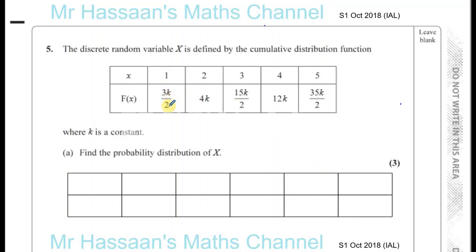Okay, question number 5 from October 2018 S1 IAL, discrete random variables. The discrete random variable X is defined by the cumulative distribution function as given here. Now what this is, is basically the sum of all the probability distributions as you go along. So they ask us to find the probability distribution using this.